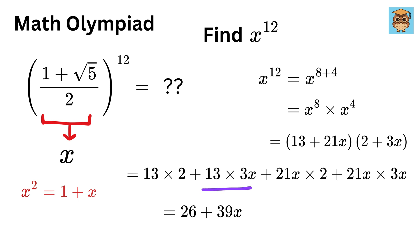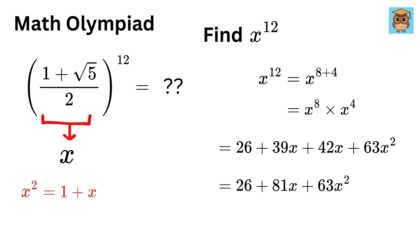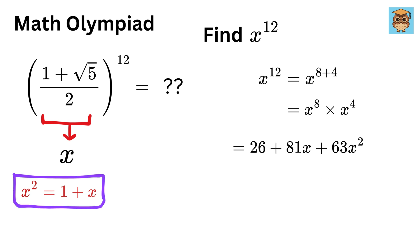be 26 + 39x + 42x + 63x². So it will be 26+81x+63x². Write x² as 1+x, and we get 26+81x+63(1+x). Simplifying, we get x¹² = 144x+89.